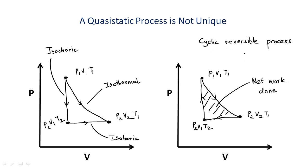For a cyclic process, the change in internal energy is zero. So the internal energy has no information about the history of the system — heat enters the system and work is done, but the state of the gas does not change in the cycle. The heat that enters the system is numerically opposite to the work done. Cyclic processes are the essence of how heat engines work and will also help us define the concept of entropy. In the next lecture, we will look at another type of process: an adiabatic process.